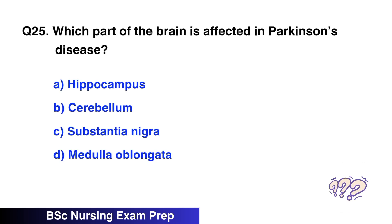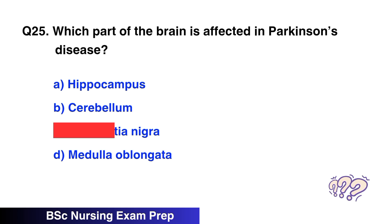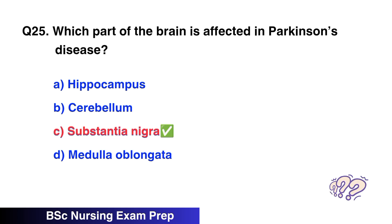Question 25. Which part of the brain is affected in Parkinson's disease? The correct option is C, substantia nigra.